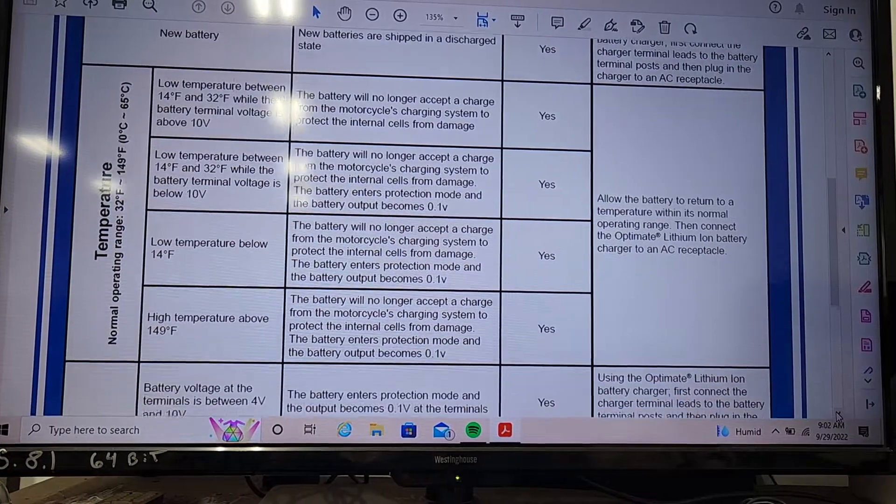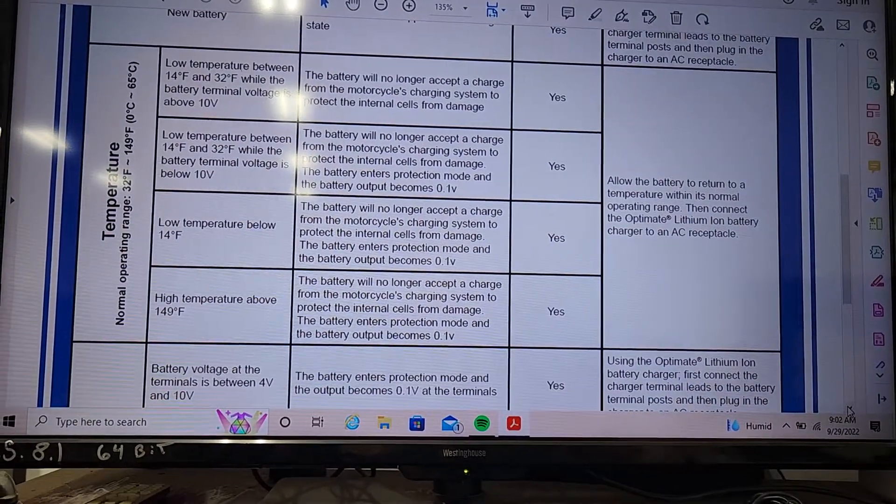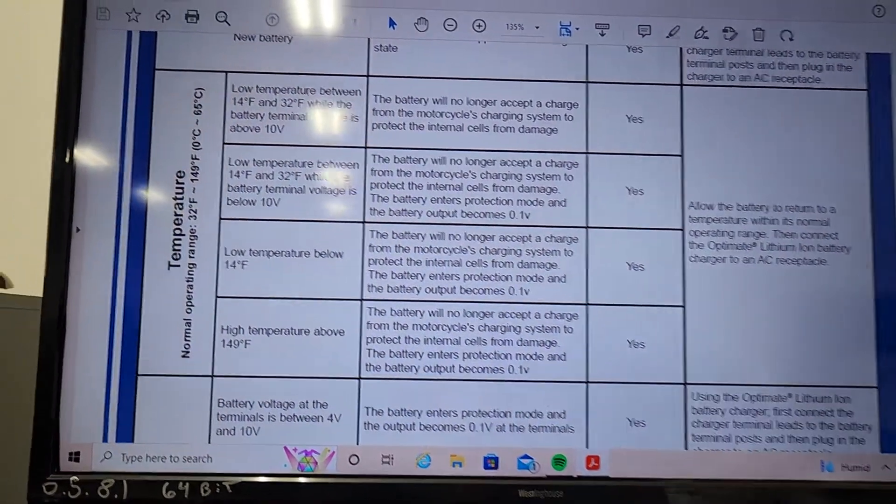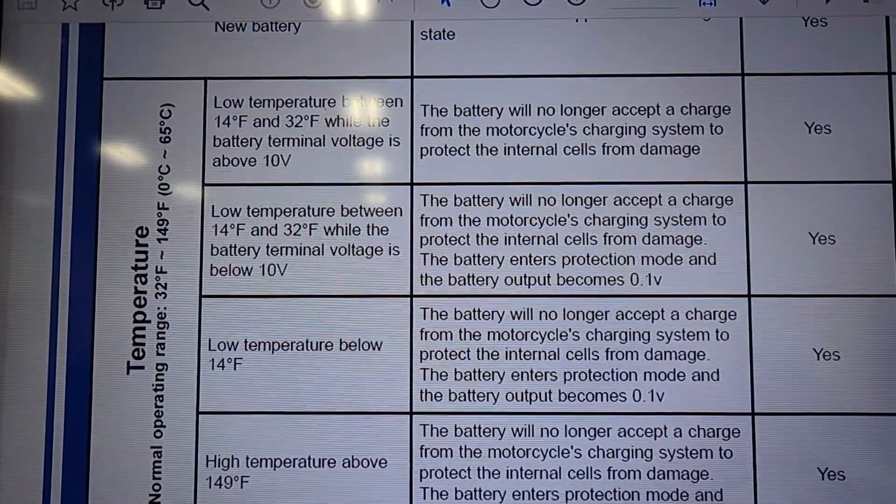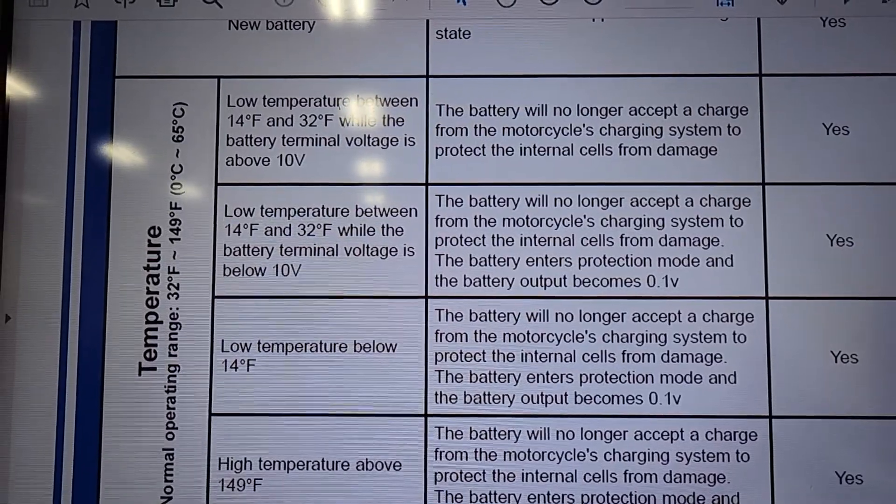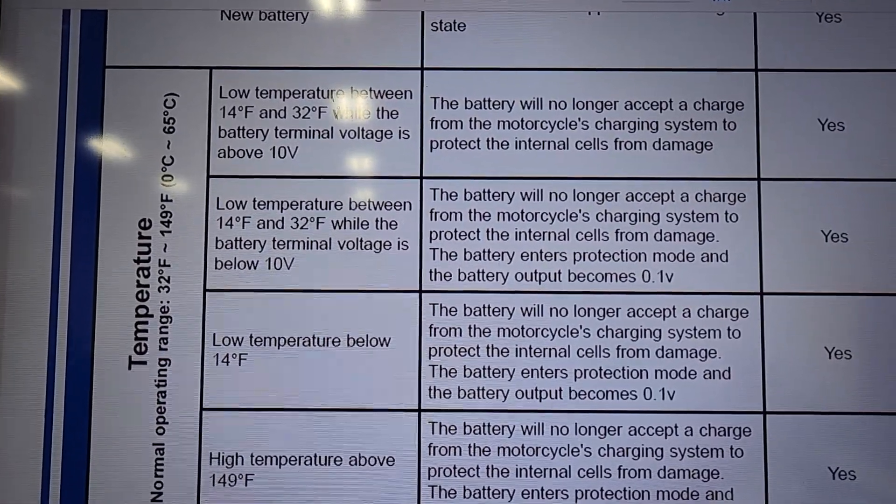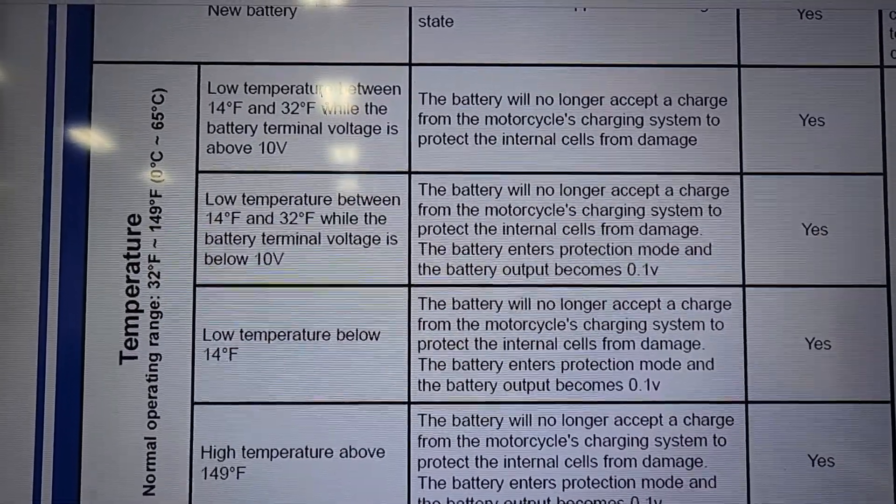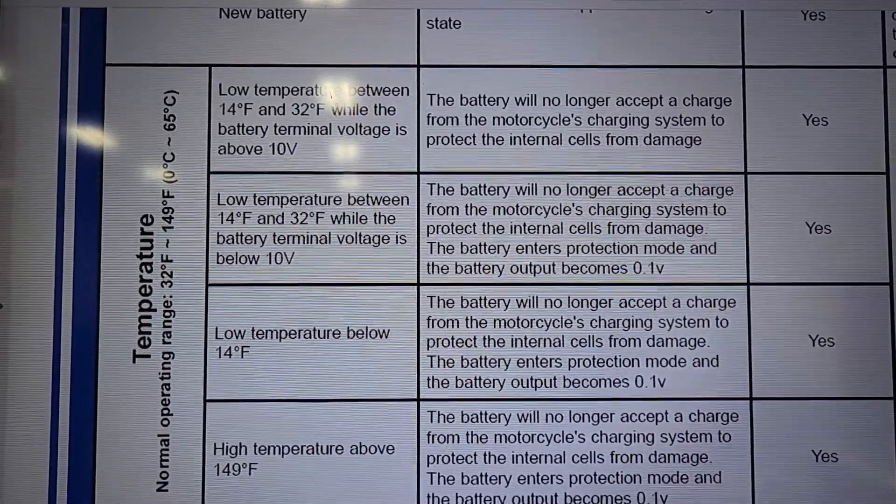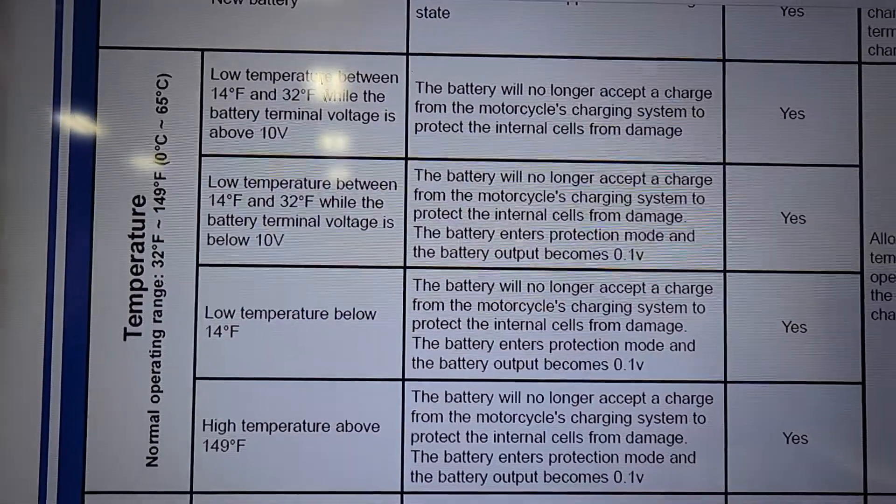Now here's the quirky, very quirky: low temperature between 14 degrees and 32 degrees while the battery terminal voltage is above 10 volts. The battery will no longer accept the charge from the motorcycle's charging system to protect the internal cells. That's the battery management system. Can you recover it? Yes.